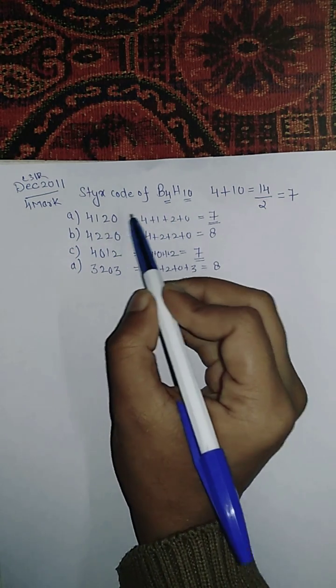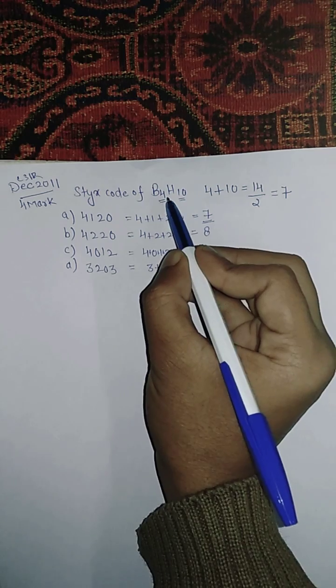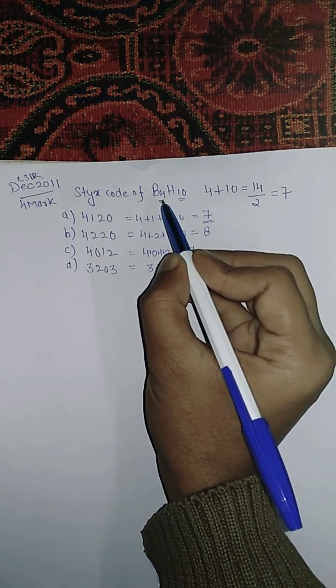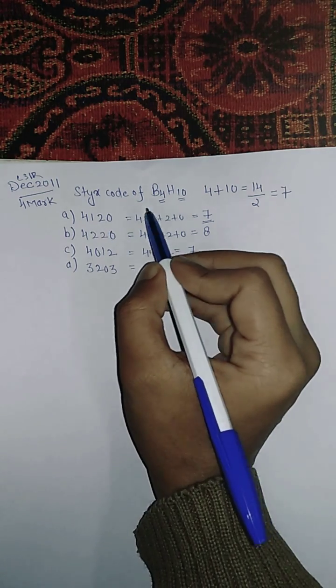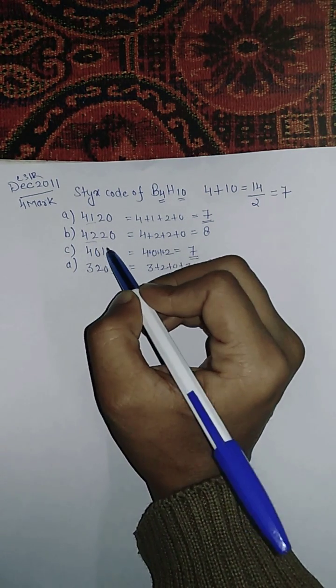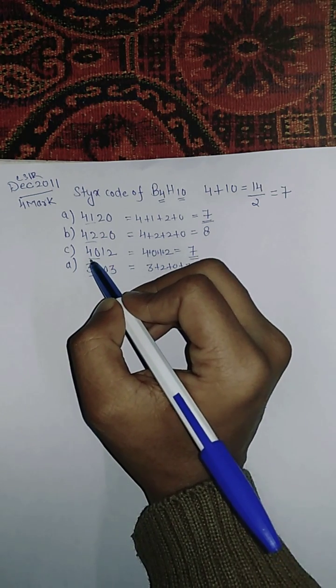So this is 5, this is 6, this is 4, and this is 5. The sum of the first two numbers is 4 in option C, which equals the number of boron atoms. So that is the correct answer.